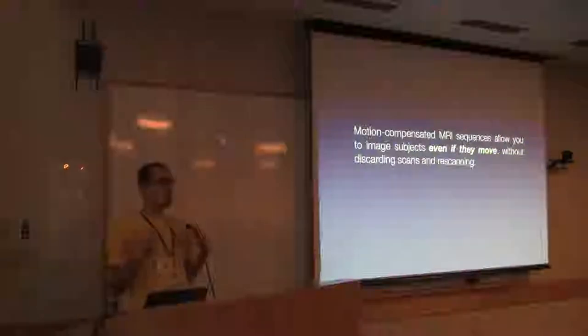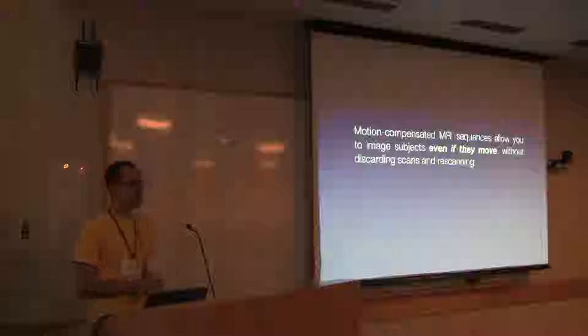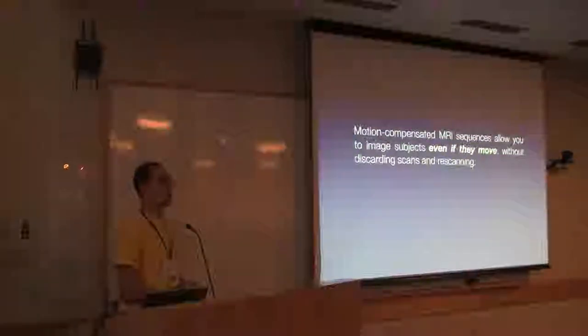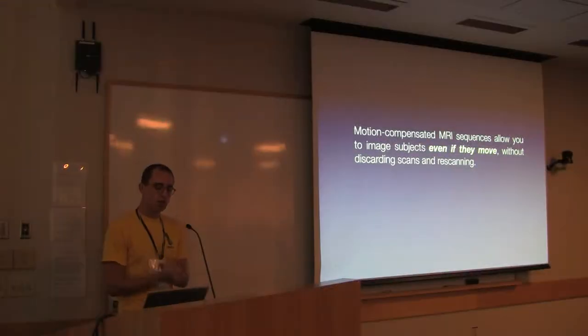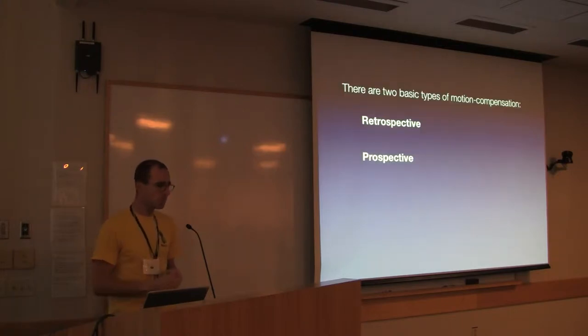The basic idea here is that motion compensated or motion corrected sequences allow you to image subjects even if they move without discarding scans and rescanning. The most common strategy if you have a wiggly subject who can't lay still for the six minutes needed for a full head volume is to throw it away and scan again, or do two and keep the best. The goal here is to make it so that with one sequence in a single shot you can get reliable data. There are many types of motion compensation strategies developed over the years because motion has been a long-term problem in MRI.